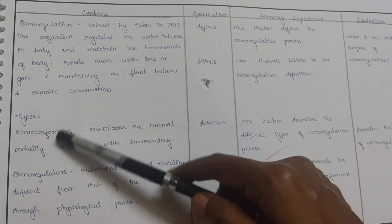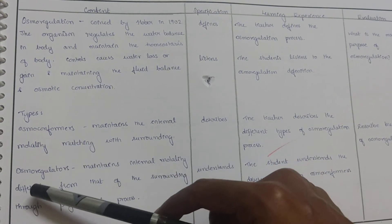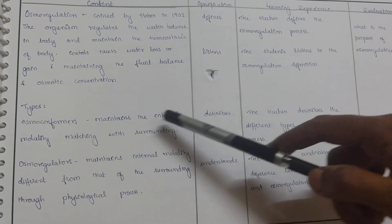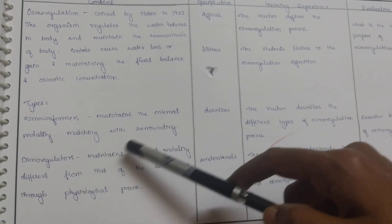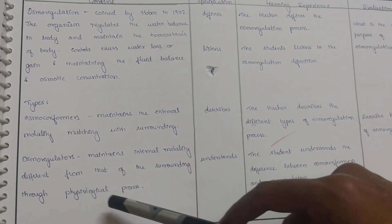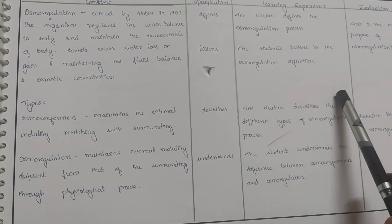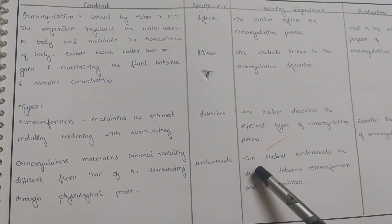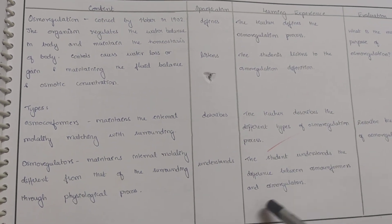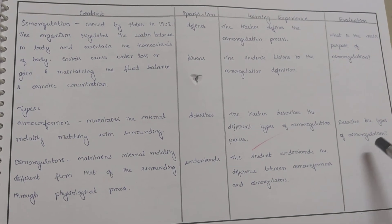We move on to the types of osmoregulation as osmoconformers and osmoregulators. Osmoconformers maintains the internal molality matching with surrounding. Osmoregulators maintains the internal molality different from that of surrounding through physiological process. The teacher describes the different types of osmoregulation process and the student understands the difference between the osmoconformers and osmoregulators.